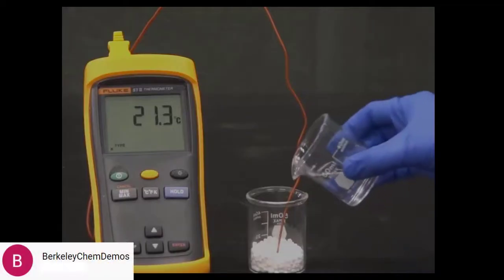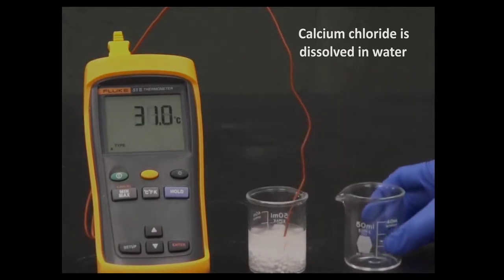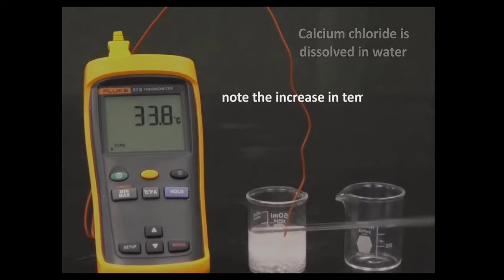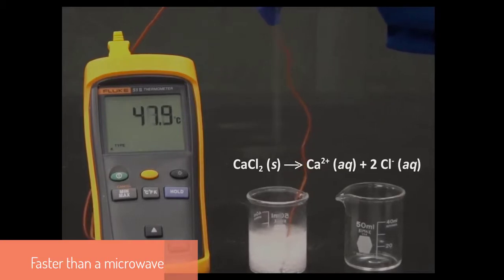But let's watch this experiment done twice by the Berkeley Chem Labs. Two experiments where salt is dropped into water. Or better yet, water is added to salt. Here's our ionic salt, here's some water, our molecular, and our temperature. Oh, it's moving up. Note the increase in temperature. Yeah, 36, 40. It's getting to be scalding hot right now.